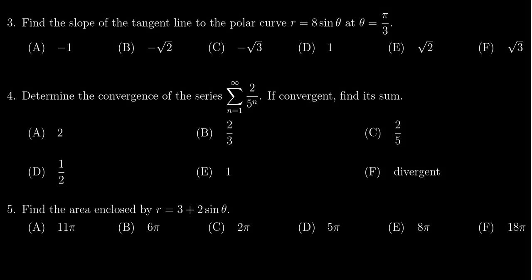In this video, we provide the solution to question number three for practice exam number four for Math 1220, in which case we have to compute the slope of the tangent line of the polar curve r equals 8 sine of theta at the moment where theta equals pi thirds.